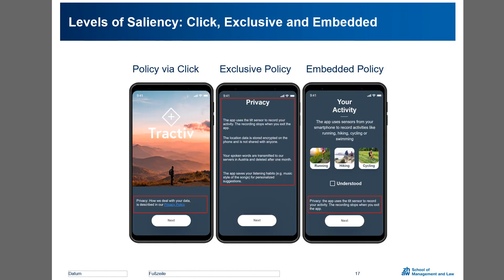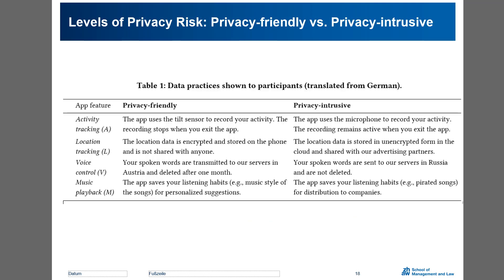We randomly assigned users to different experimental conditions. One factor we varied was the level of saliency. In the left condition, participants saw a policy that was only available via a click. In the middle condition, the policy text was presented exclusively on one app screen. In the right condition, the policy text was embedded into the app, meaning the long text was spread over different screens.